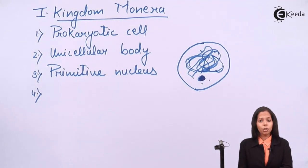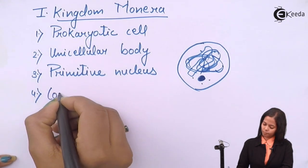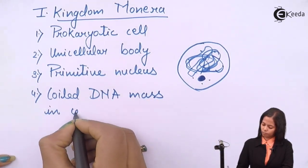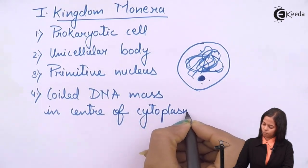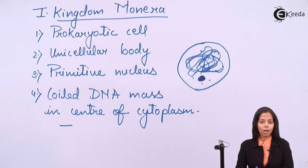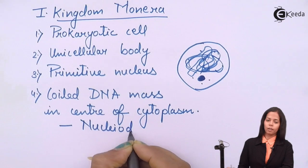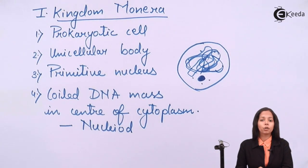If in primitive nucleus all these structures are absent, then who regulates the activity of cell? There is a structure which is present in the center of cytoplasm which helps to control the activity of prokaryotic cell, and that material is coiled DNA mass. This coiled DNA mass is called as nucleoid. In short, nucleoid is called as controller of prokaryotic cell. It is also called as nucleus of prokaryotic cell.